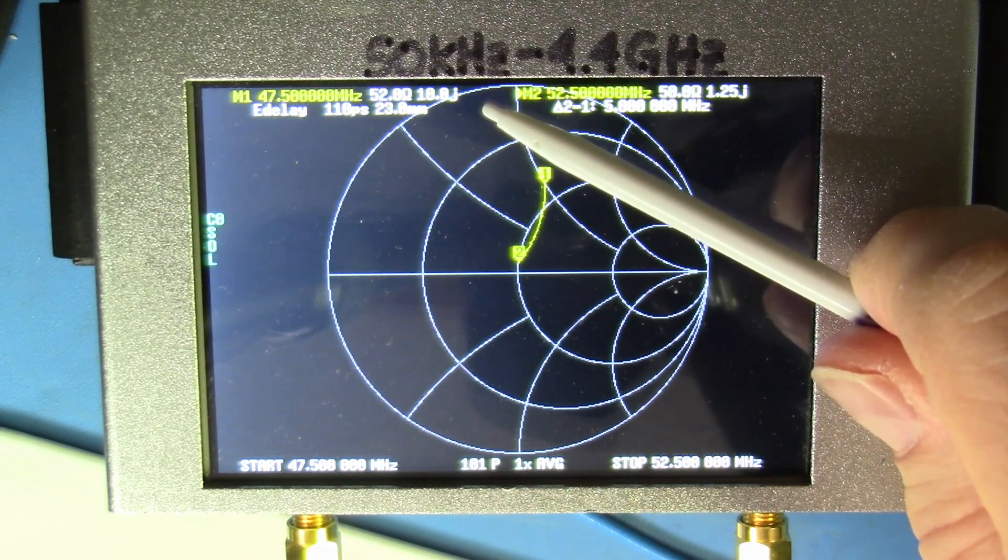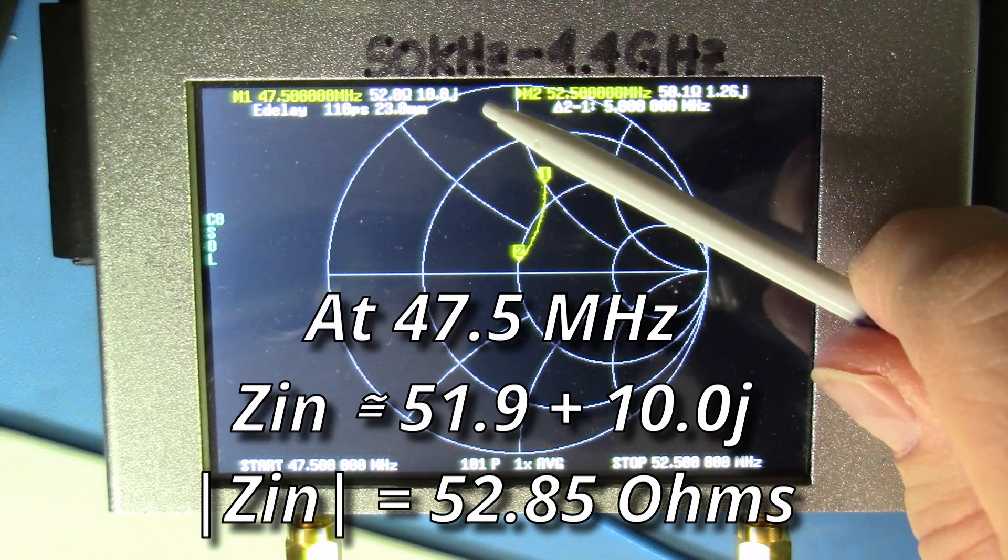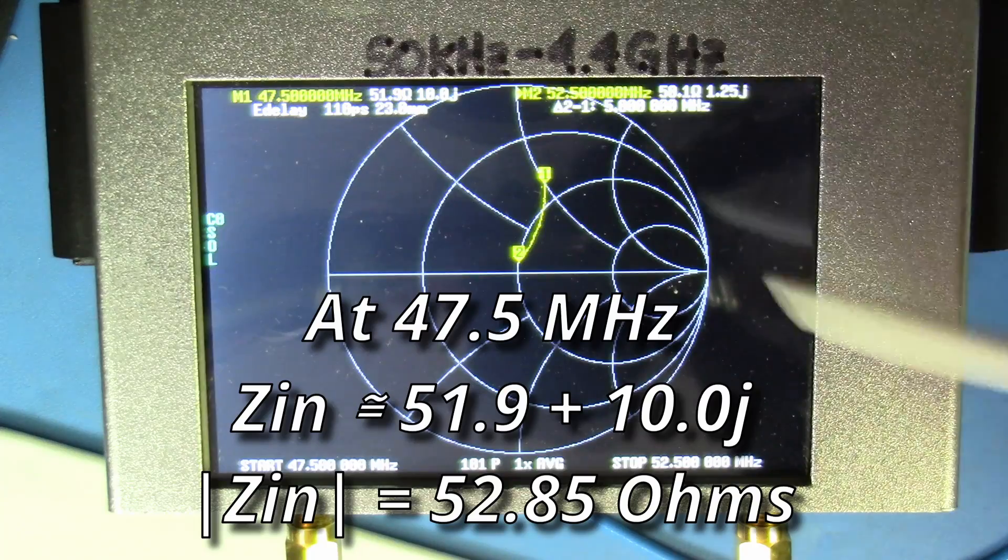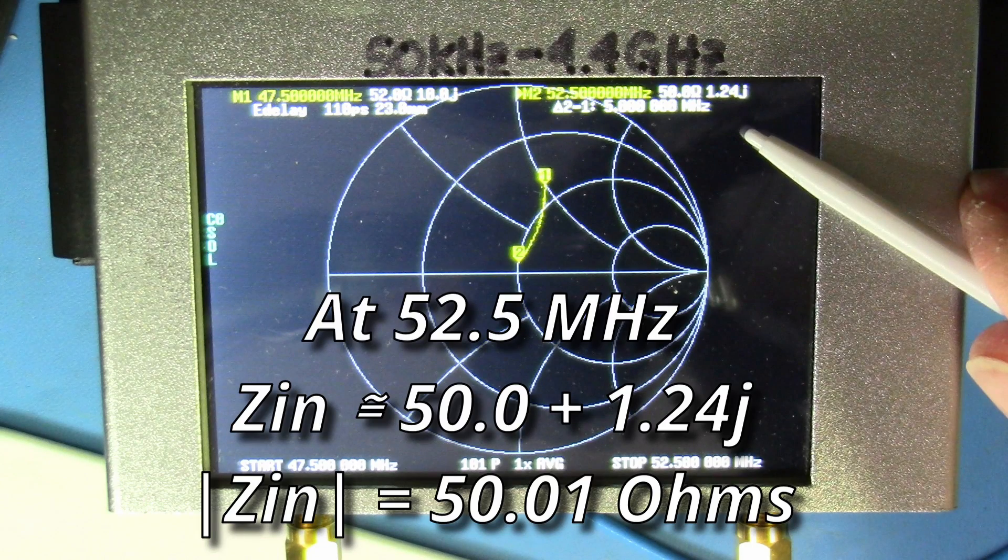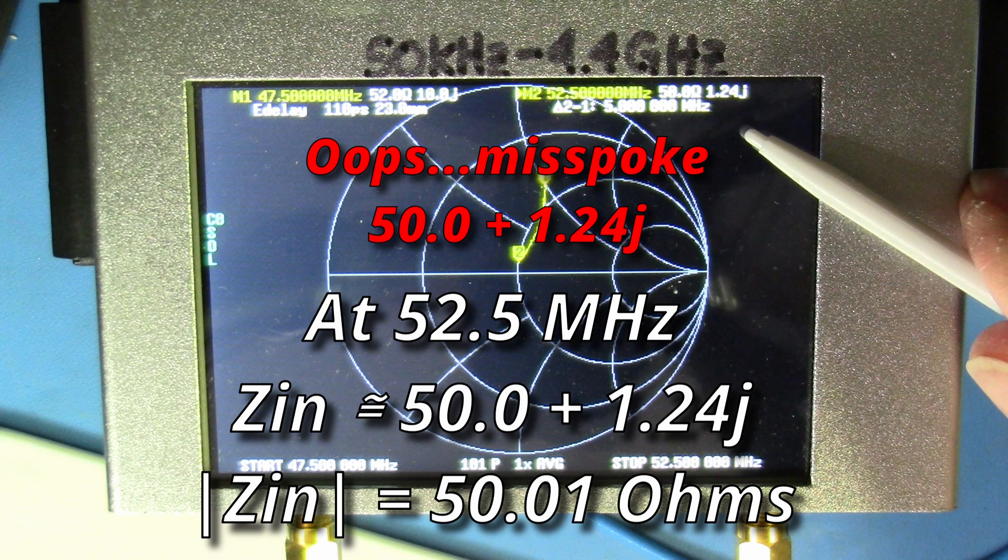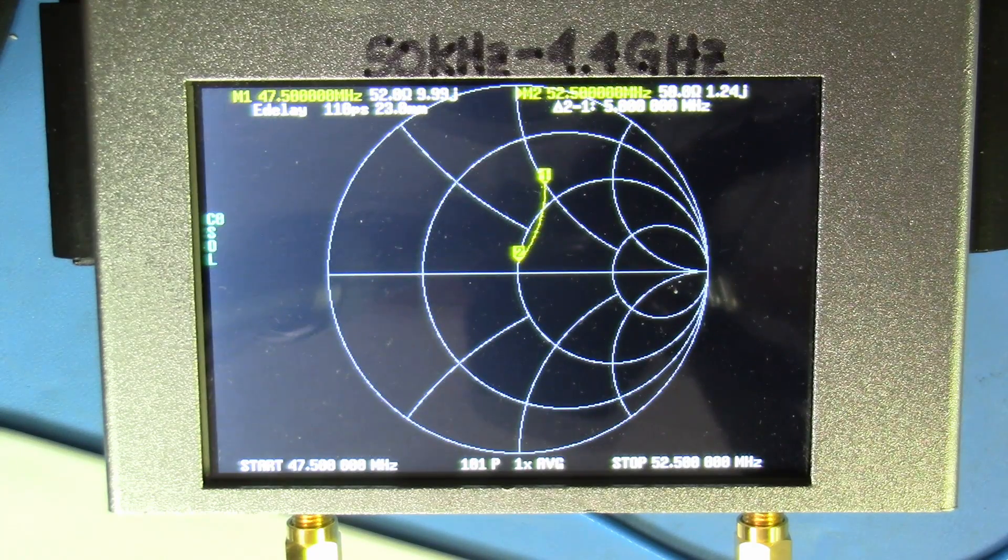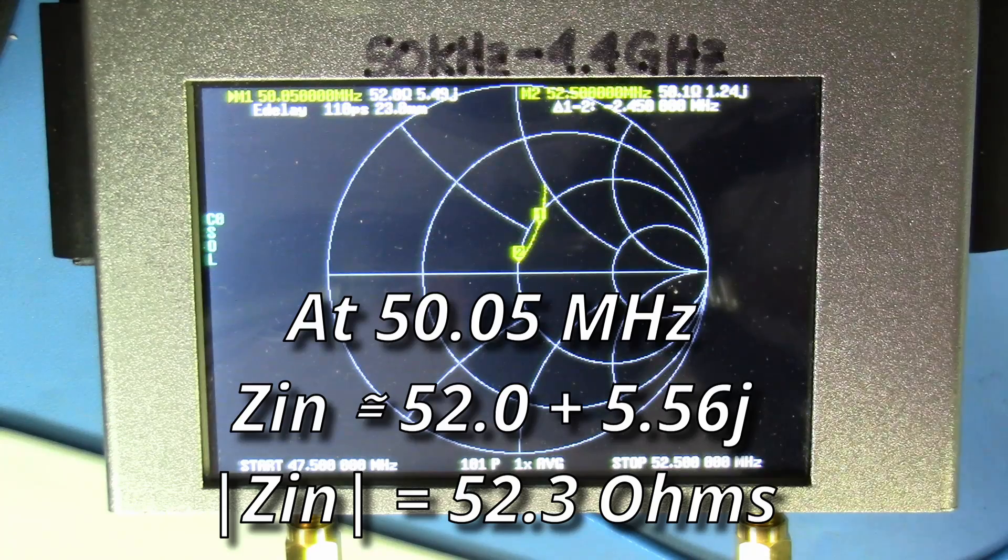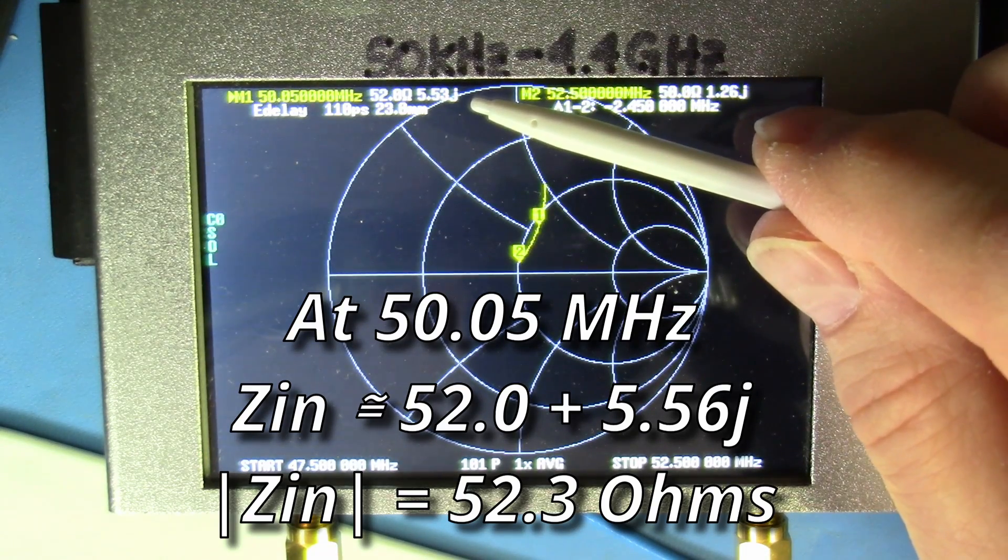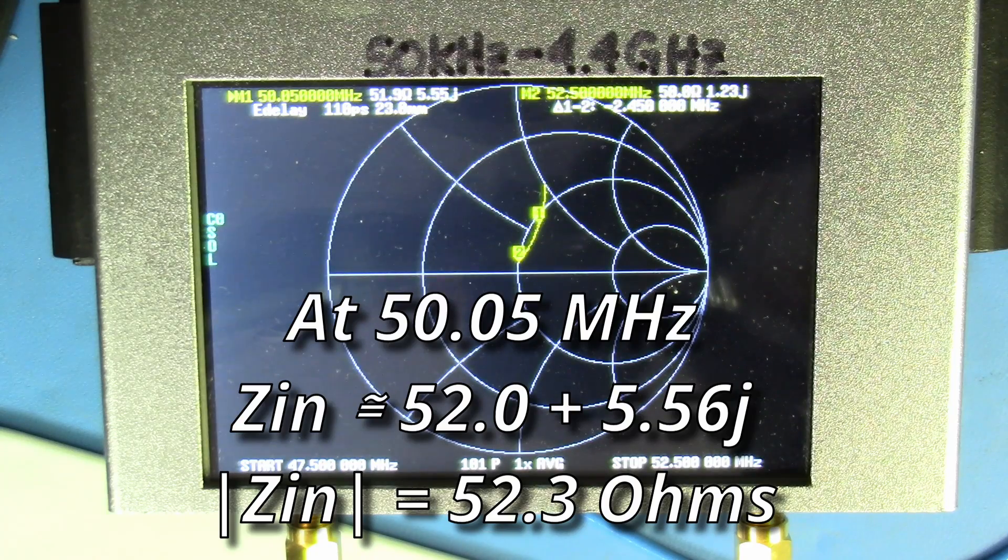So what do we see for values? We can see at the top of the screen that at 47.5 MHz the input impedance is 51.9 plus 10J. This gives us a magnitude of 52.85 ohms. At 52.5 MHz the input impedance is 50.0 plus 1.40 J which gives us a magnitude of 50.01 ohms. So now let's move our marker 1 to the desired center frequency of 50 MHz. Here at 50 MHz the input impedance is 52.0 plus 5.56 J. This has a magnitude of 52.3 ohms.